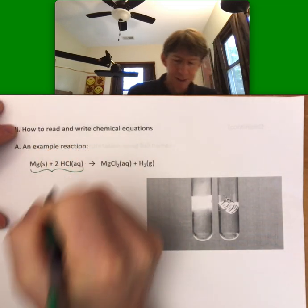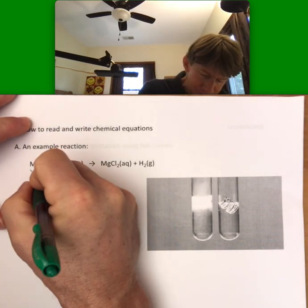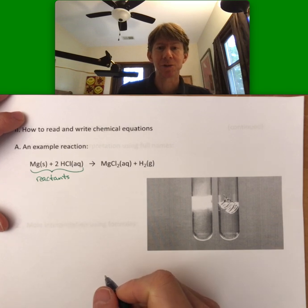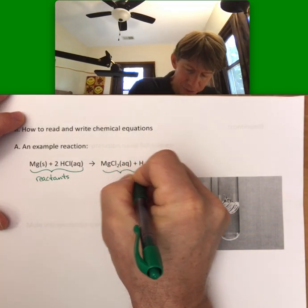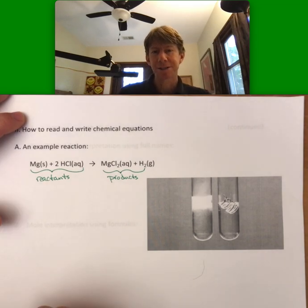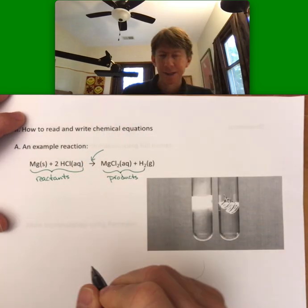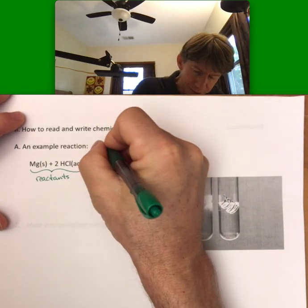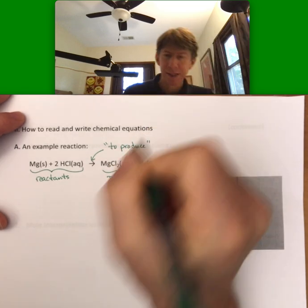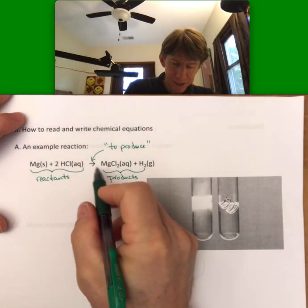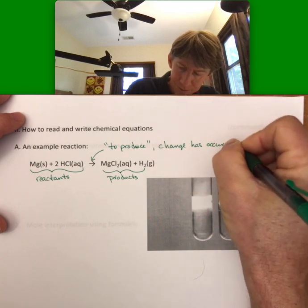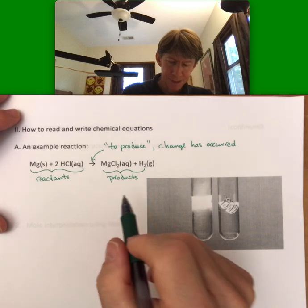So first off, the things on the left are reactants. And typically for us, they are the things that you start with. We typically don't start with any products, although it is possible to start with them. But the things on the right are products. The arrow here stands for, when we interpret this in terms of English, to produce. And it can also be used to signify that a change has occurred.